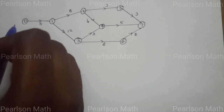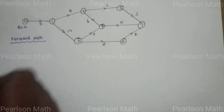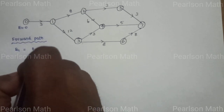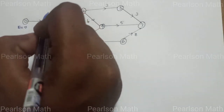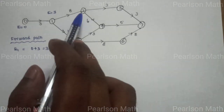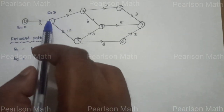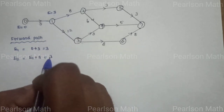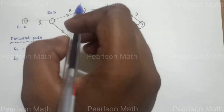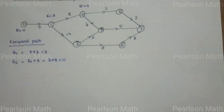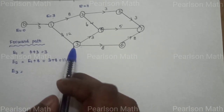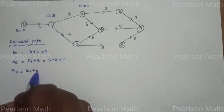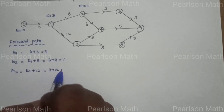Now the forward path. The earliest start at node 0 is E0 equal to 0. E1 equals E0 plus 3, that is 0 plus 3 equal to 3. E2 equals E1 plus 8, that is 3 plus 8 equal to 11. E3 equals E1 plus 12, that is 3 plus 12 equal to 15.